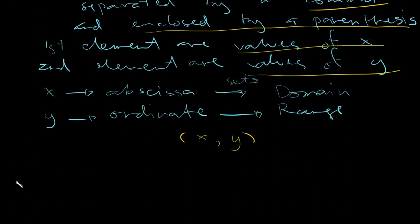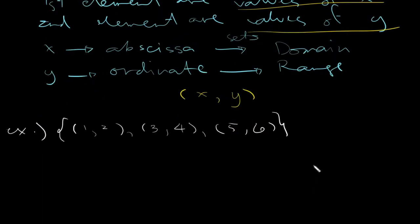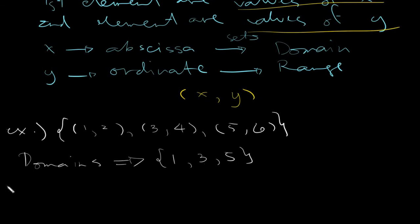For example, say we have the set {(1,2), (3,4), (5,6)}. This is an example of a relation because it is simply a group or set of ordered pairs. Having this set, we can identify the domain — the elements of x — which is 1, 3, and 5. And of course the range, being the y values, is simply 2, 4, and 6.